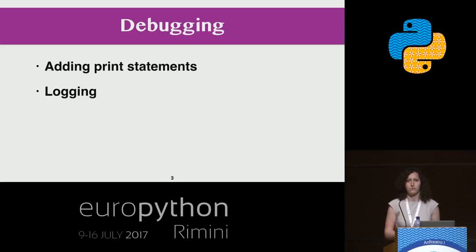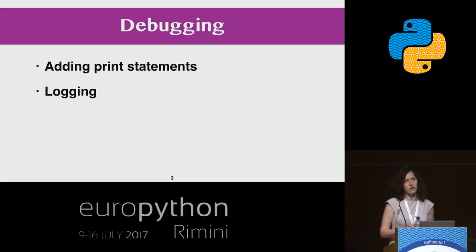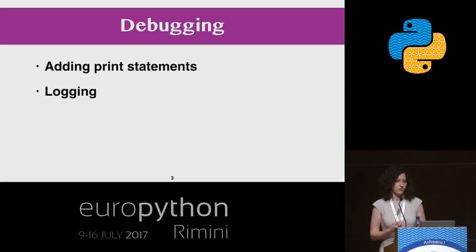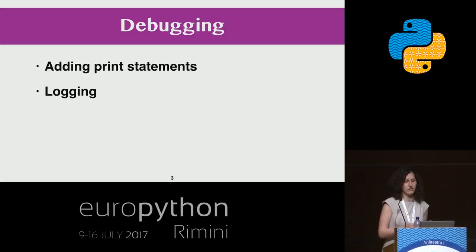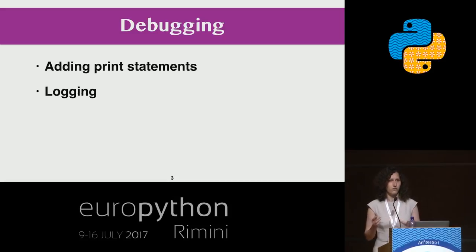When we write programs, unfortunately, we always introduce bugs into them. And there are many different ways to find these bugs. For example, you can simply add print statements. Also, some people prefer logging. In fact, it's the same as print statements but with the ability to turn it on, off, or add some options.